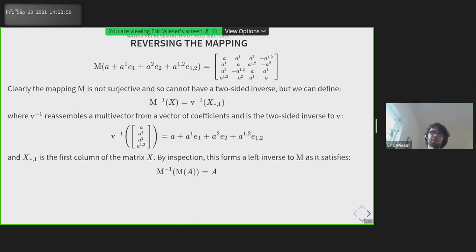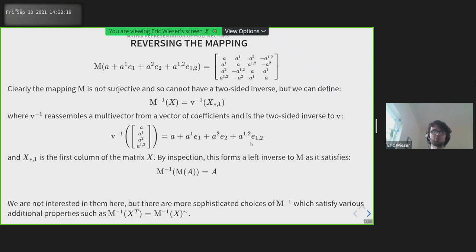Sometimes, though, we want to go in the other direction. Clearly, this mapping is not surjective - there are some matrices which do not fit the pattern of this 4x4 matrix. So it doesn't have a two-sided inverse. But there's an easy one-sided inverse we can pick, which is just to take that first column back out of the matrix and turn it back into a multivector. So here we have M inverse is take the first column, and then V inverse is convert that column matrix into a multivector. It's by no means the only left inverse we could pick, but for what we're going to do next, we don't care about those in the simplest implementation.